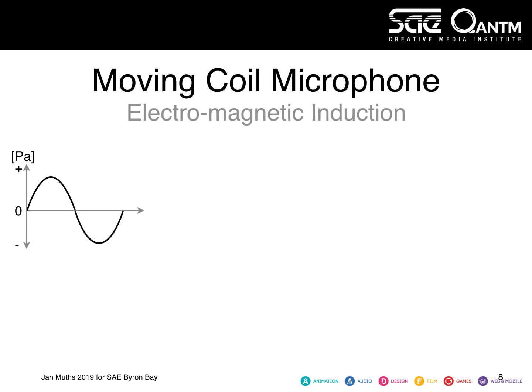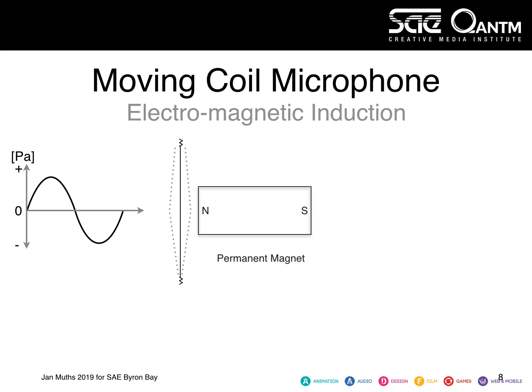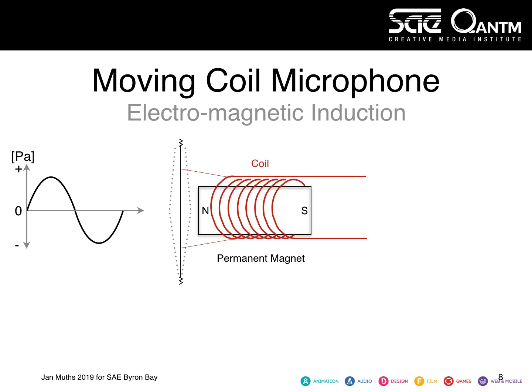Let's have a closer look at the moving coil microphone. The moving coil microphone uses the principle of electromagnetic induction. Starting with the sound in the room measured in Pascal over time, this sound energy moves the diaphragm in and out, represented by the dotted line. Behind the diaphragm, we find a permanent magnet suspended in a fixed position. Attached to the diaphragm is a coil — effectively a thin copper wire wound around the magnet in a flexible way so that it can move forward and back. On the ends of this coil, we can measure an electric energy.